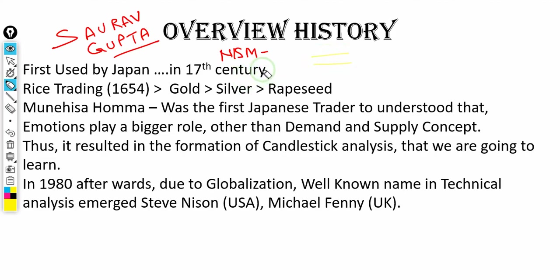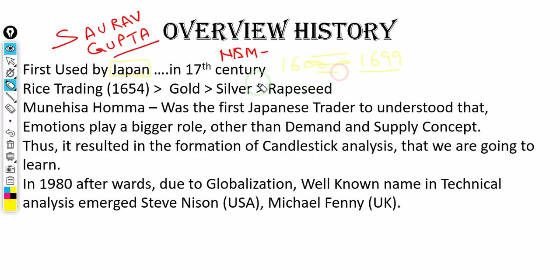Candlestick patterns first emerged in Japan. Some people think that these are from America or UK, but these are from Japan — around the 17th century, approximately 1600 to 1699. These candlesticks were used for rice trading, gold trading, silver trading, and other commodities like rapeseed.